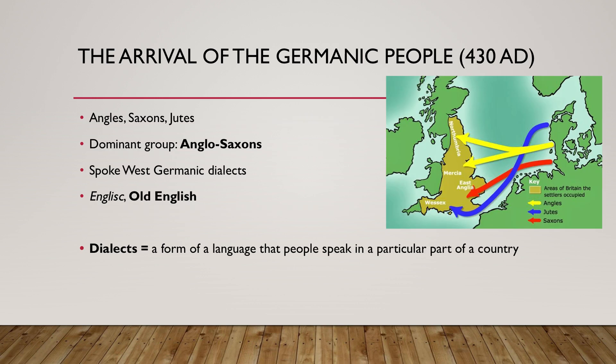The development of the English language began in the 5th century, when Germanic people started to make the short journey across the North Sea. Three major Germanic tribes — known as the Angles, Saxons, and Jutes — settled on the east coast of England. They spoke a number of Western Germanic dialects. Over time, these people became known as the Anglo-Saxons, and soon they displaced the native Celts and controlled most of England. The Anglo-Saxons spoke English, also known as Old English.